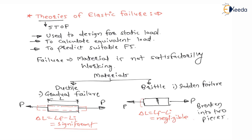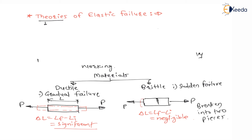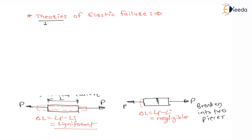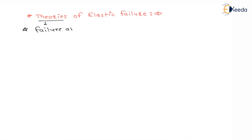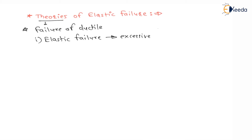We need to understand ductile failure as well as brittle failure. For ductile material, the first type of failure is elastic failure, which means excessive elastic deformation.